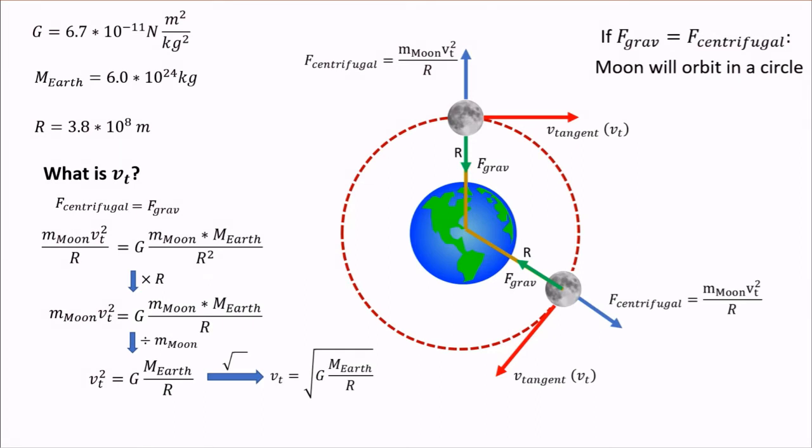If we plug in the values, we find that the answer is approximately 3,000 meters per second, or about 3 kilometers a second. That's quite fast compared to most things on Earth. A commercial plane only flies at about 250 meters per second.